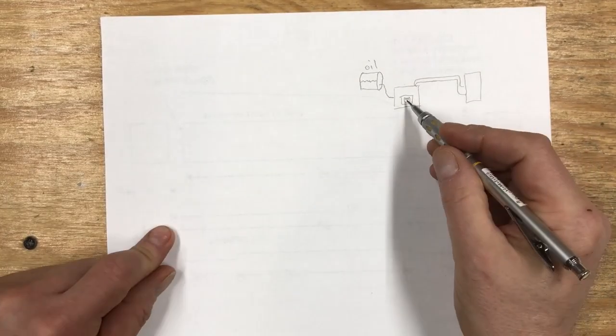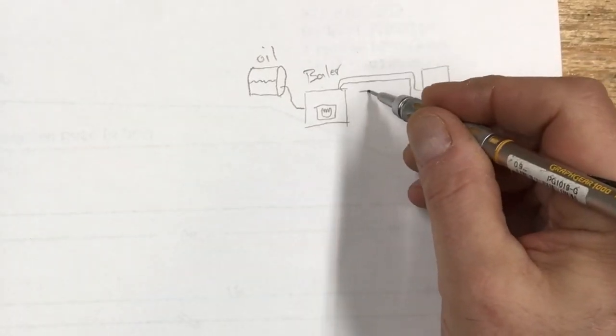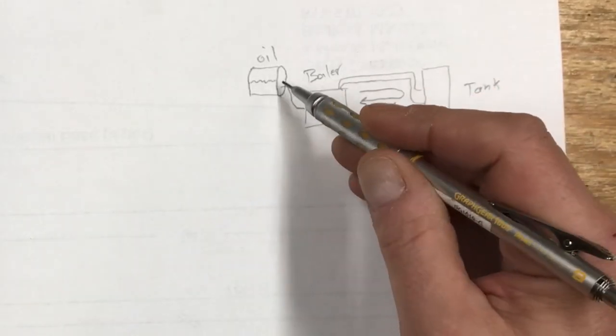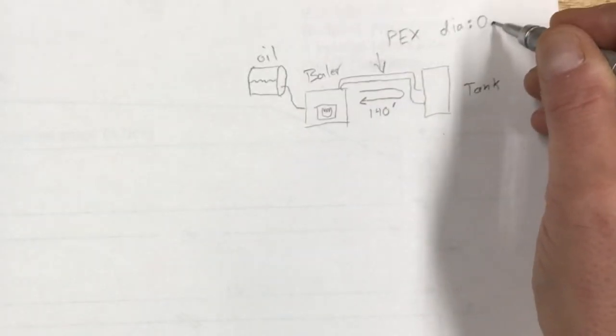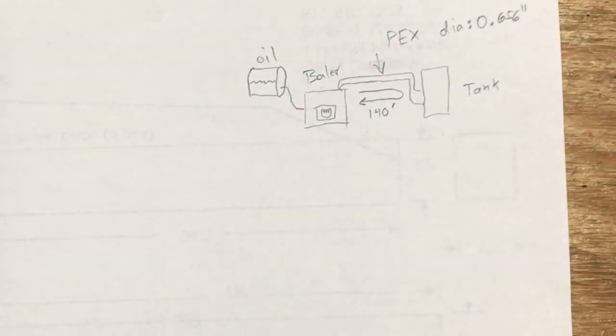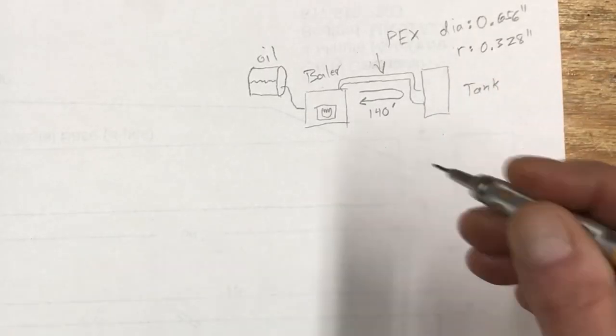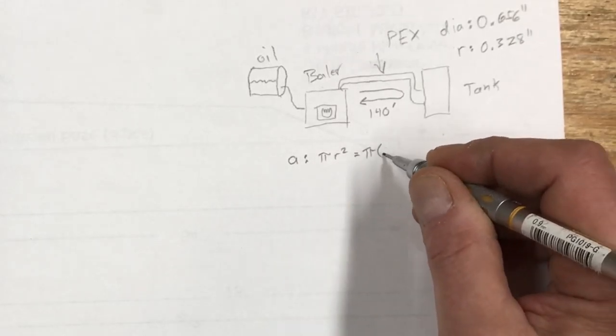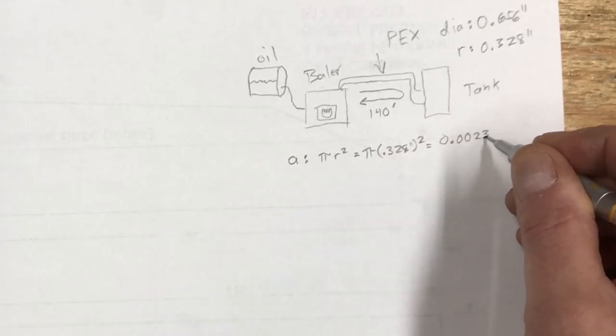Okay so I'm going to go to a pencil because it's a little finer. Here's my boiler and here's the tank. Earlier I said the round trip was 150 feet, it was actually a little bit less than that, I'm going to say it's 140 feet. The boiler is fired by oil so I have oil in a tank nearby to the boiler. This tubing here is PEX and as I said it has a diameter of approximately 0.656 inches so that means the radius is about 0.328 inches. So the area of the PEX is pi r squared is pi times 0.328 inches squared which if you do the math turns out to be 0.00235 square feet.